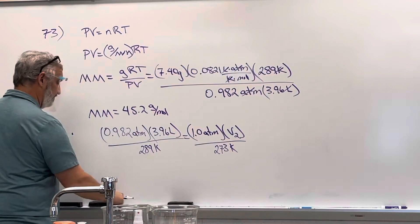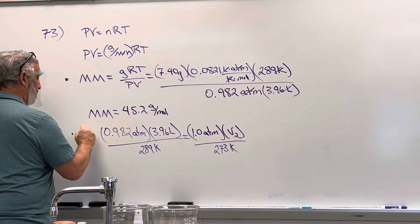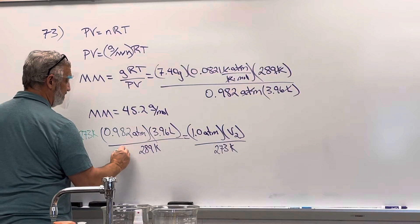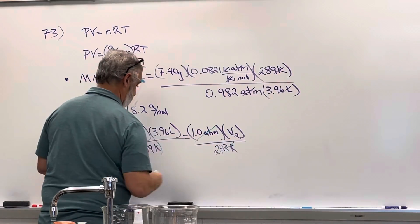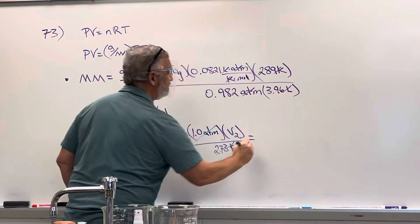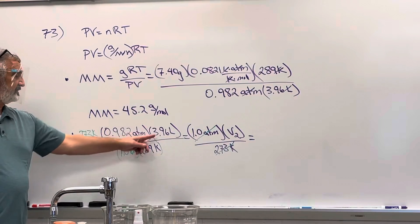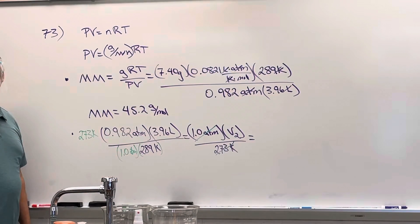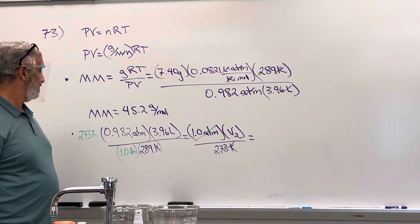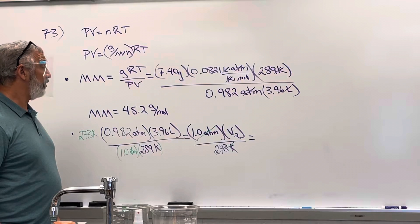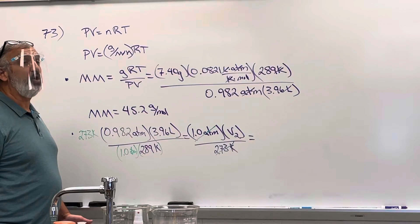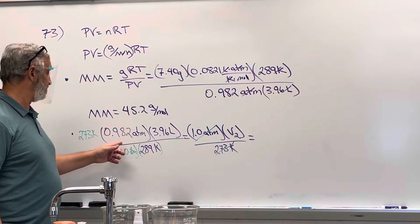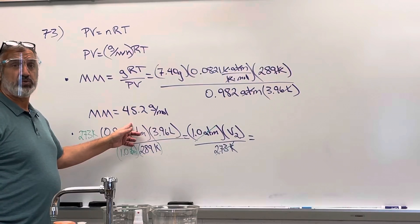So to solve for V2, the 273 comes up here, the one atmosphere comes down here. So V2 equals this times this times this divided by this divided by that. 3.67 liters. Because of the standard temperature and pressure, it'll always be 22.4 only if it's one mole. One mole will occupy 22.4 but 7.4 grams isn't going to be one mole.